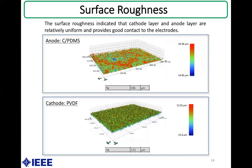By testing the surface roughness of the cathode and anode layers, it was confirmed that they have a relatively uniform surface, which provides good contact to the electrodes.